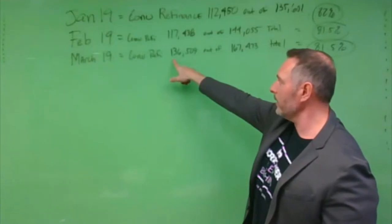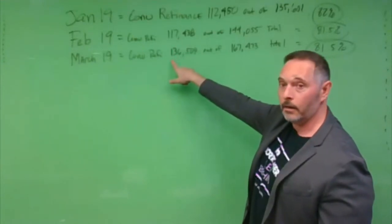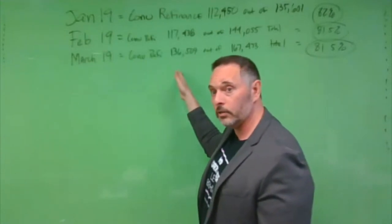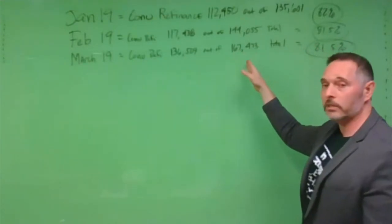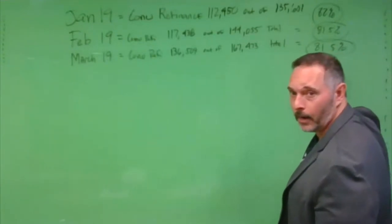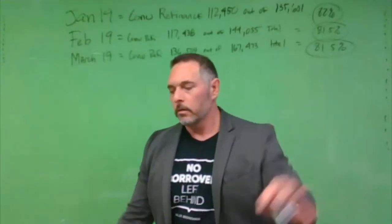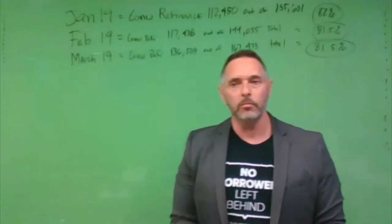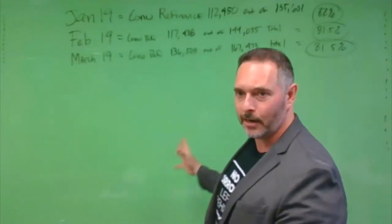In March of 2019, conventional loans went up again, 136,509 conventional refinance transactions out of 167,473. As a percentage, it stayed the same, 81.5%. My point is that the conventional market makes up 80% of the industry.